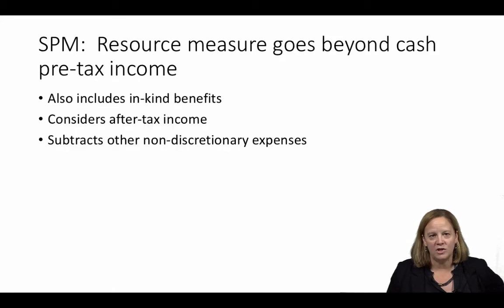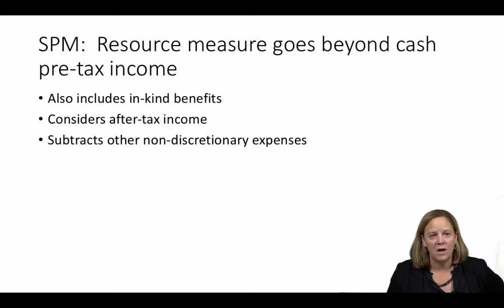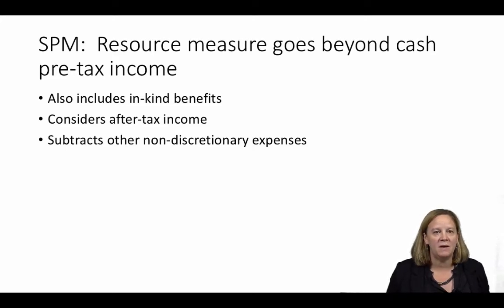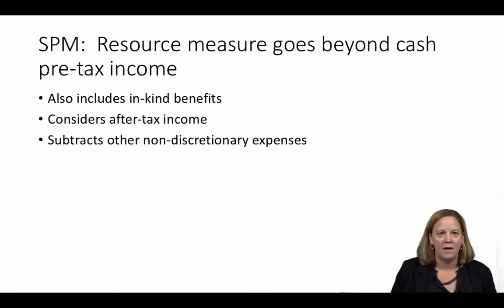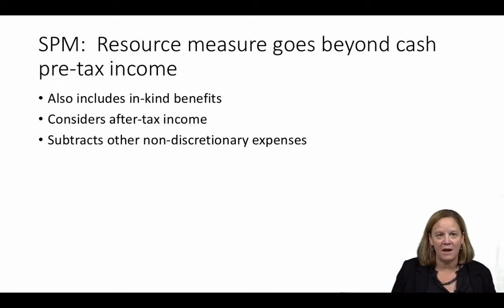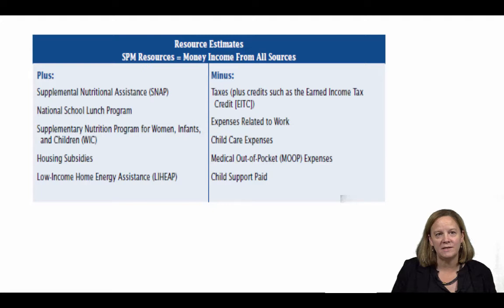A second change to the Resource Measure is among the most important aspects of the SPM. Rather than using only cash income before taxes, the SPM takes a broader measure of income. The SPM counts cash income and in-kind benefits that can be used to meet needs for food, clothing, shelter, and utilities. The chart shown summarizes the major additions and subtractions from income in the SPM.